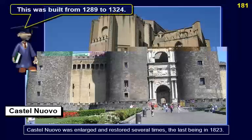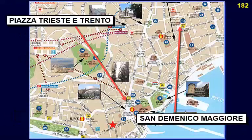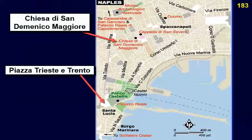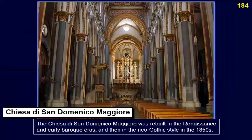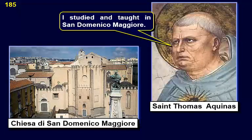The Chiesa di San Domenico Maggiore is a massive Gothic edifice built from 1289 to 1324. It was rebuilt in the Renaissance and early Baroque eras, and then in the neo-Gothic style in the 1850s. Saint Thomas Aquinas studied and taught in San Domenico Maggiore.